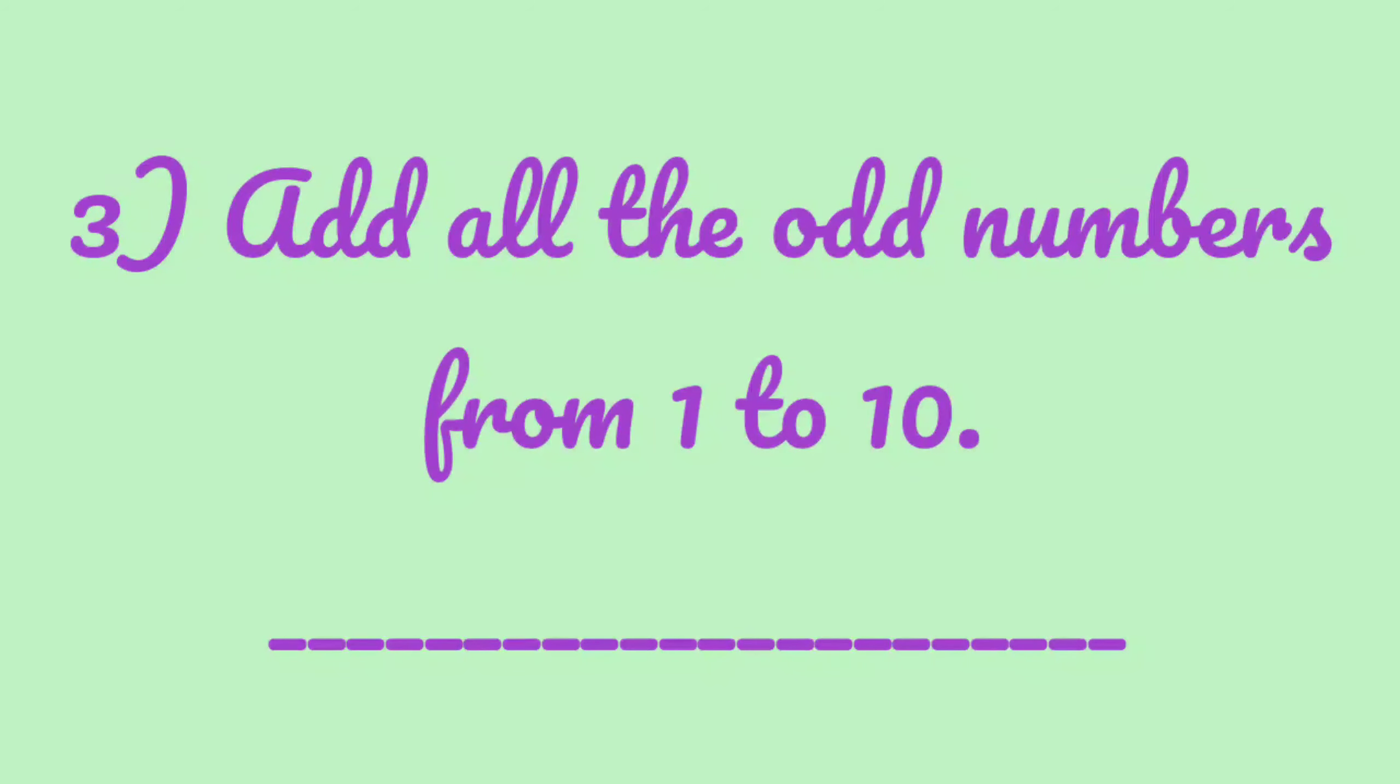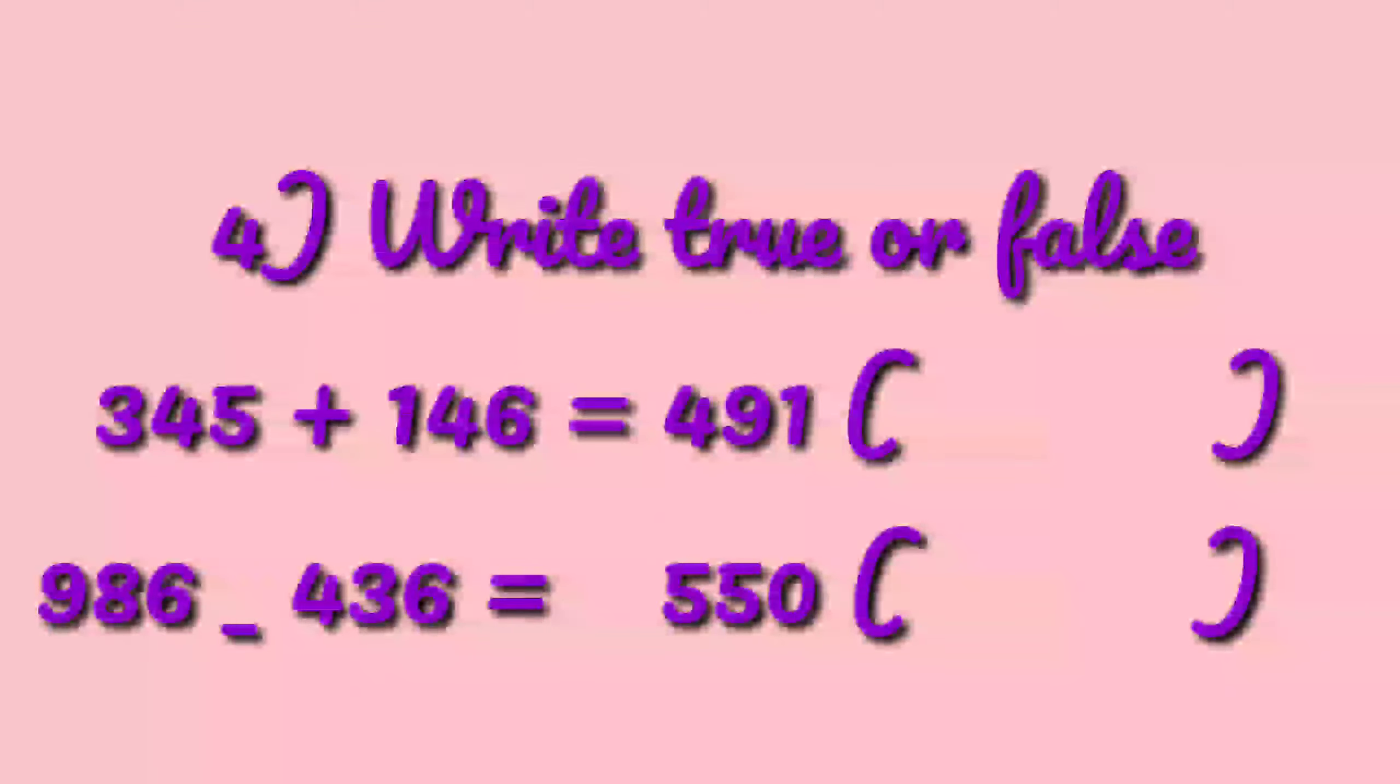Next, number 4: write true or false. See, 345 plus 146 equals 409. Is this correct or not? So you have to write true or false for both the sums.